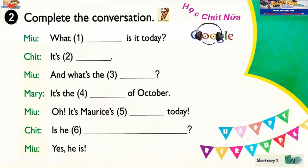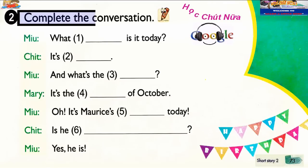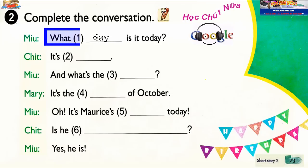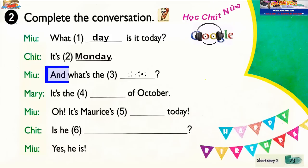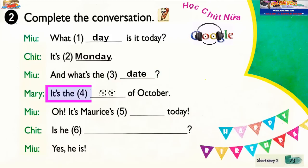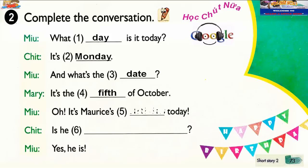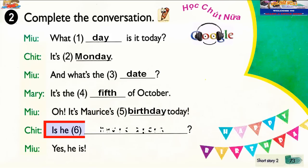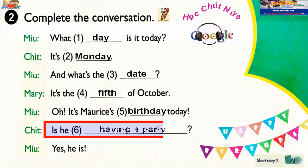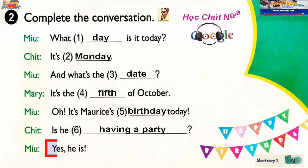Page 73. Activity 2. Complete the conversation. What day is it today? It's Monday. And what's the date? It's the 5th of October. Oh, it's Morris' birthday today. Is he having a party? Yes, he is.